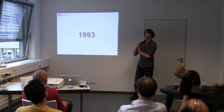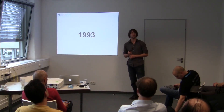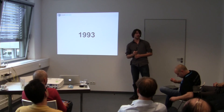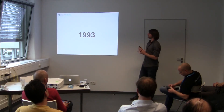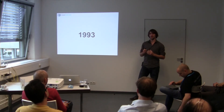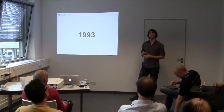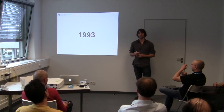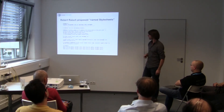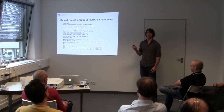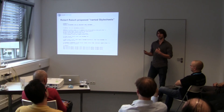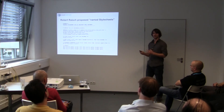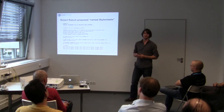It all started in 1993, and that is almost 20 years ago. It's not particularly CSS — the Cascading Style Sheets — that started then, but people started thinking about style sheets in general. Because Robert Reich proposed named style sheets. As you can see, it looks a little bit different, and in my opinion, harder than the CSS today.